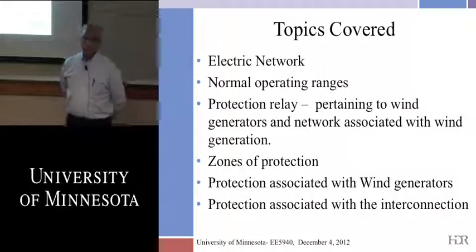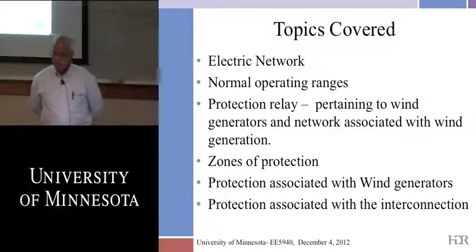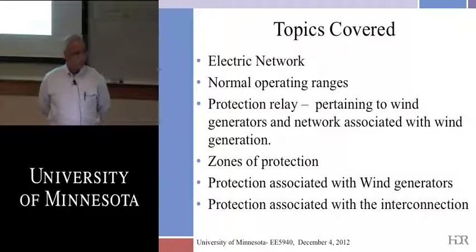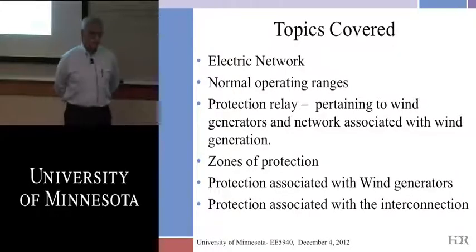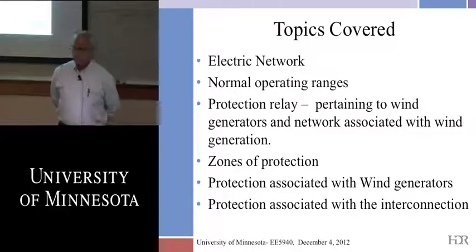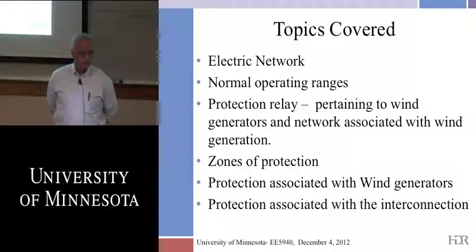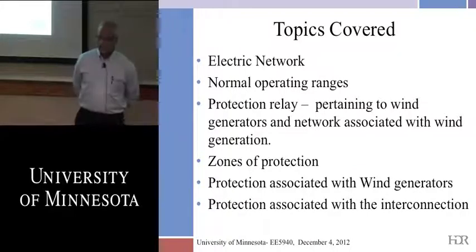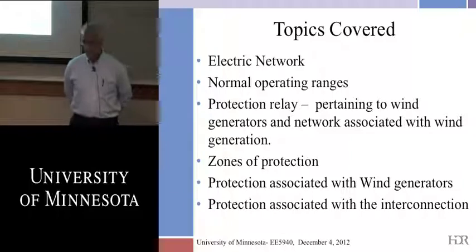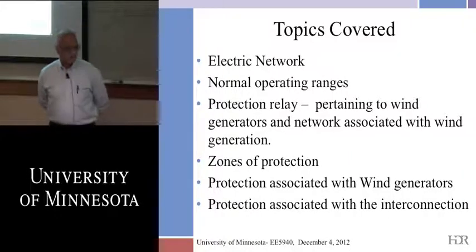Key protection terms will be introduced: selectivity, sensitivity, reliability, and zones of protection. When the system is working normally, nobody thinks about protection engineers — but if something goes wrong, such as the 2003 blackout where relays were said to be set incorrectly, protection engineers are blamed. They are always thinking about abnormal sequences and situations to bring the system back to normal.